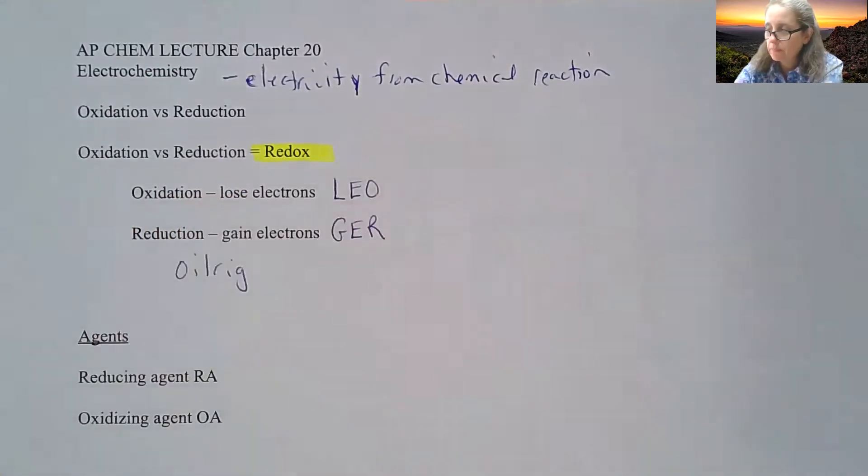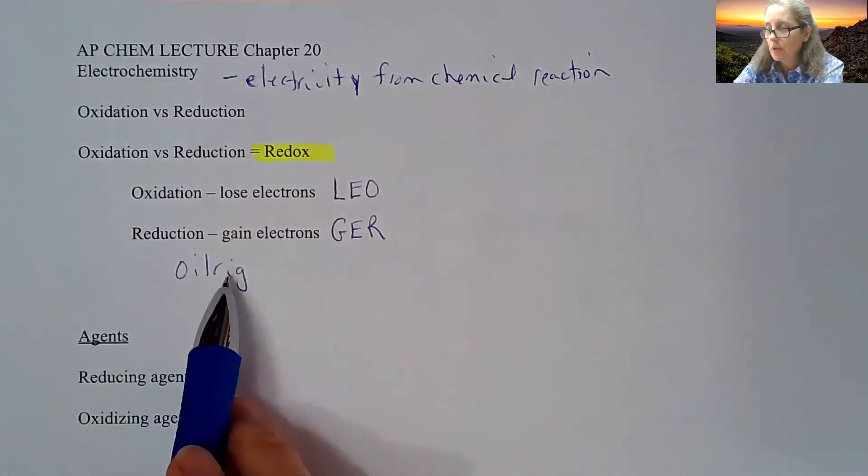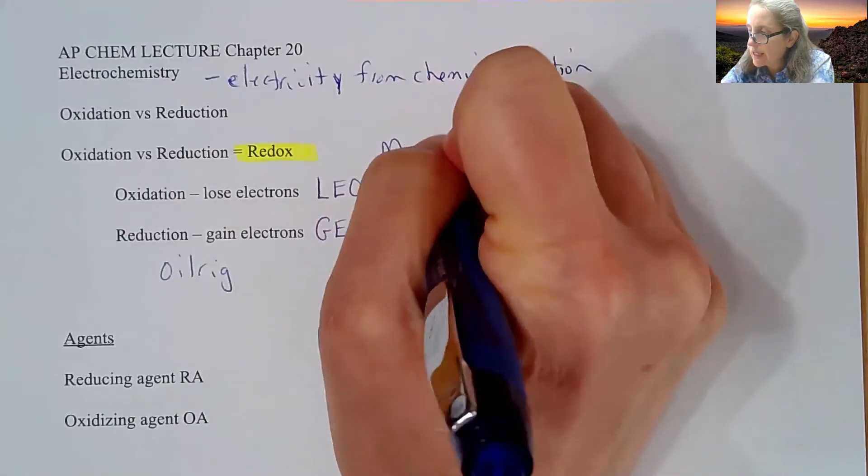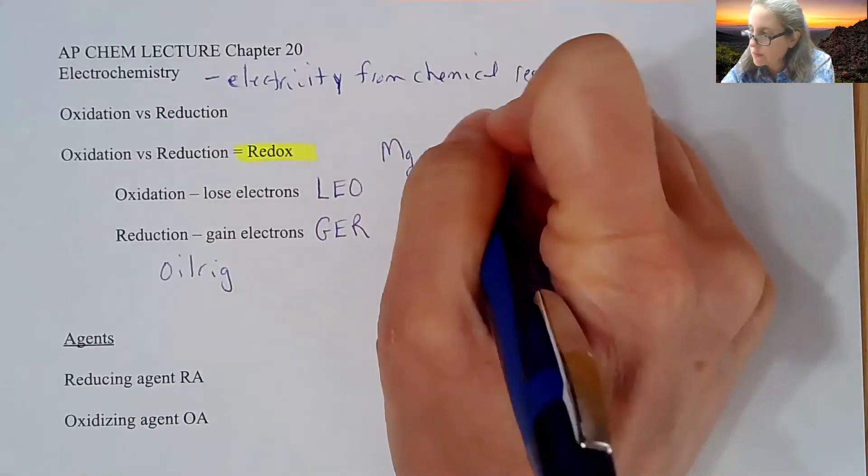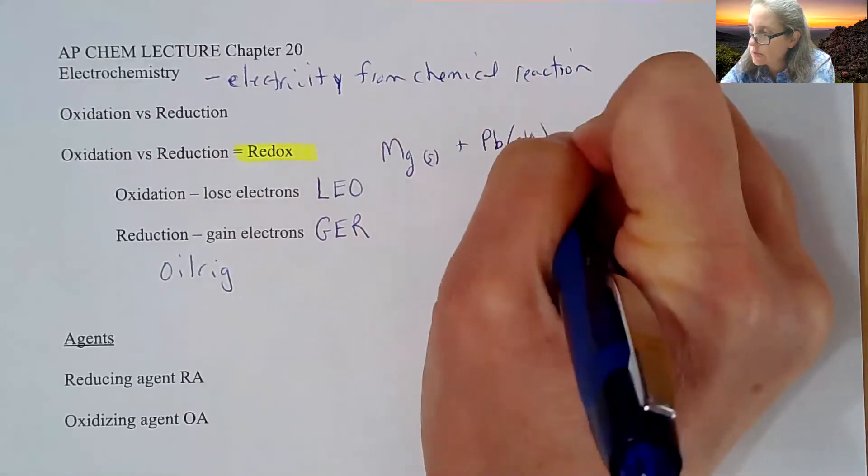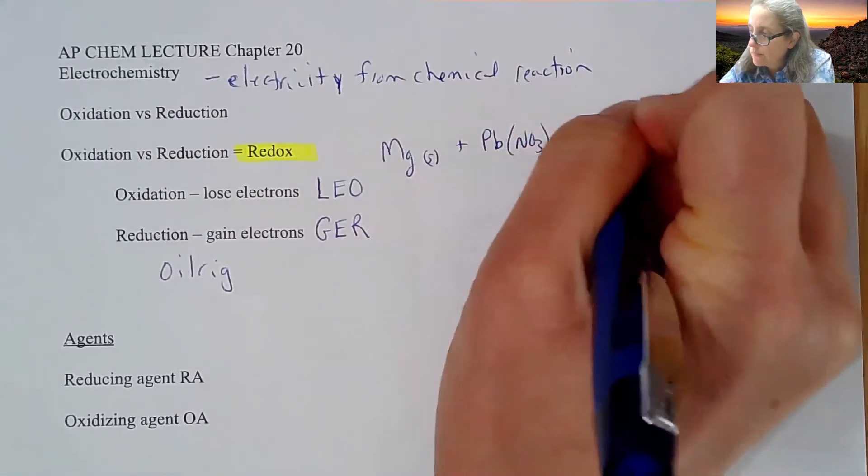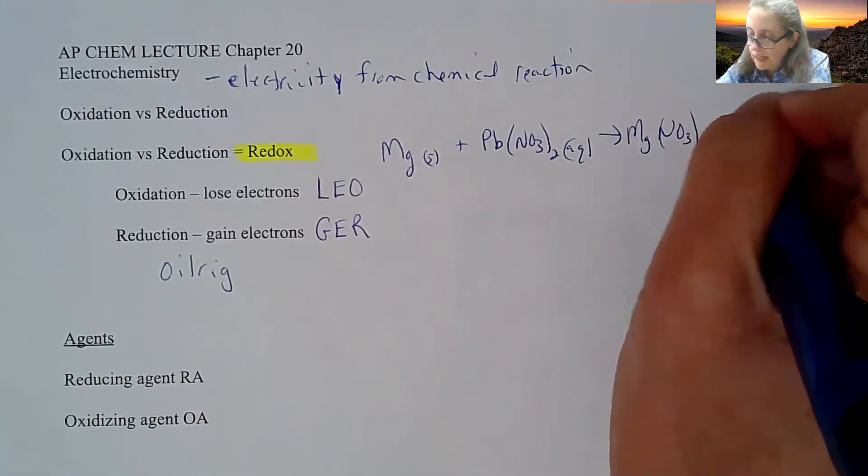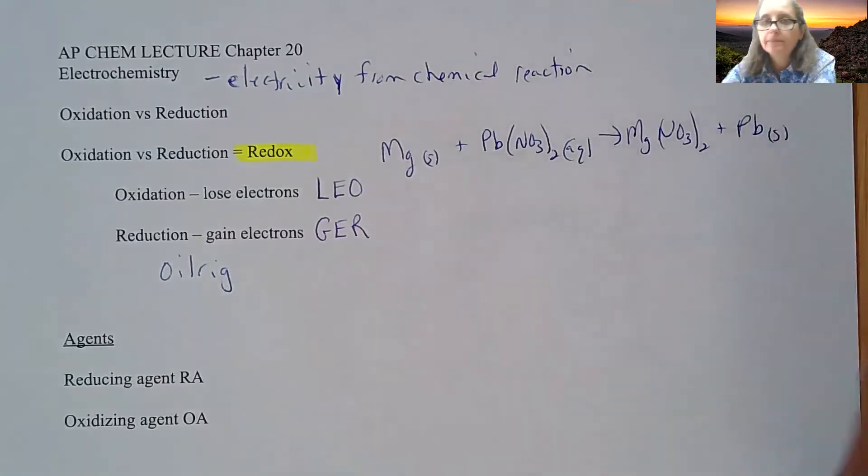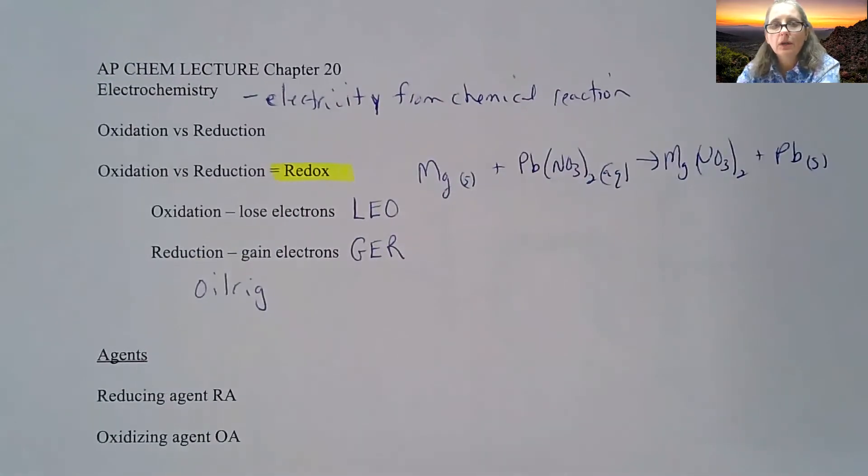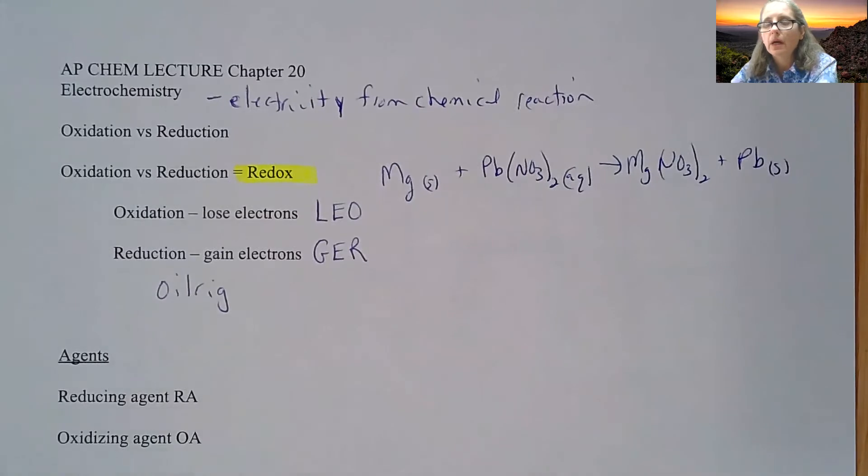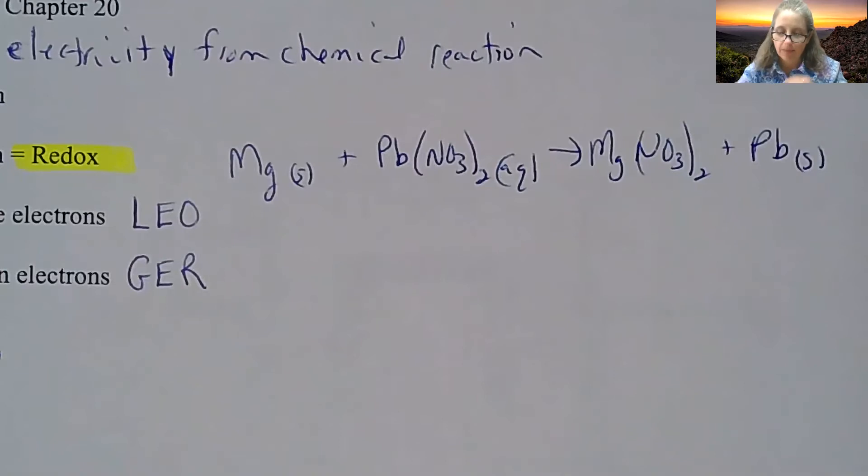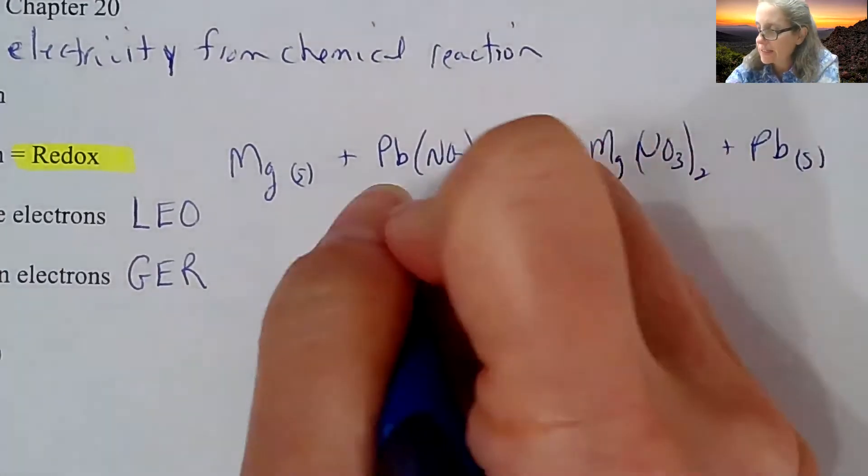How we use this is if I take a chemical reaction: magnesium reacting with lead(II) nitrate produces magnesium nitrate and lead. We call this more of a traditional single replacement reaction, but really we are changing oxidation state.